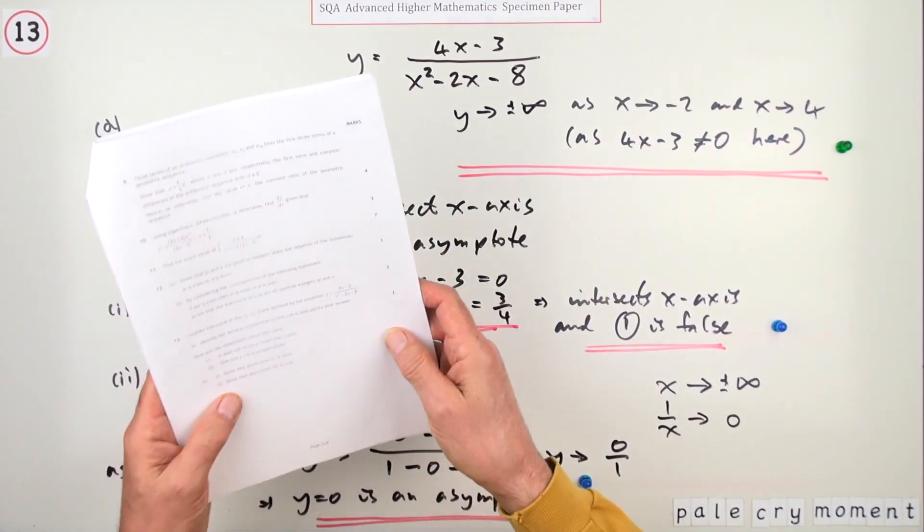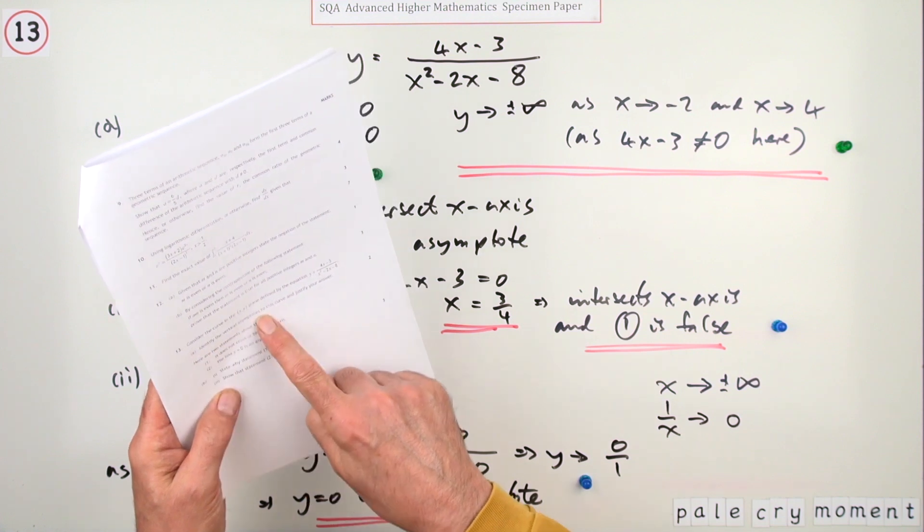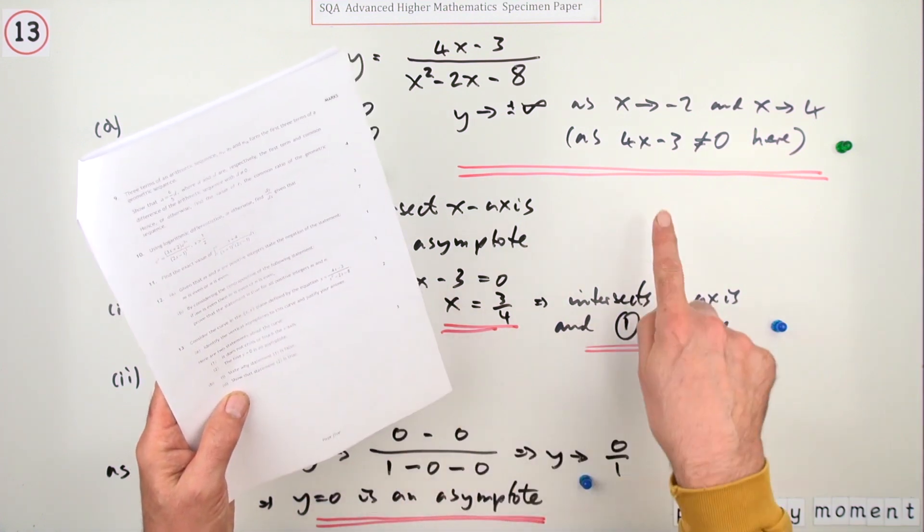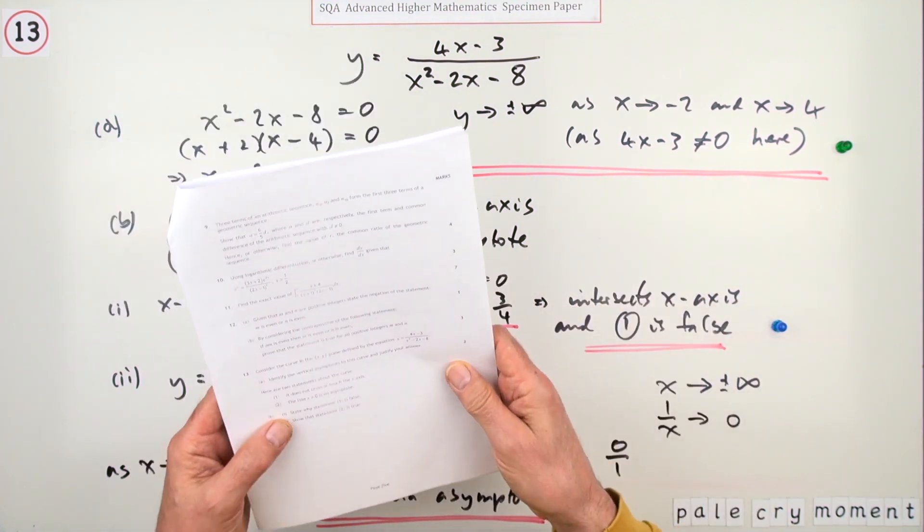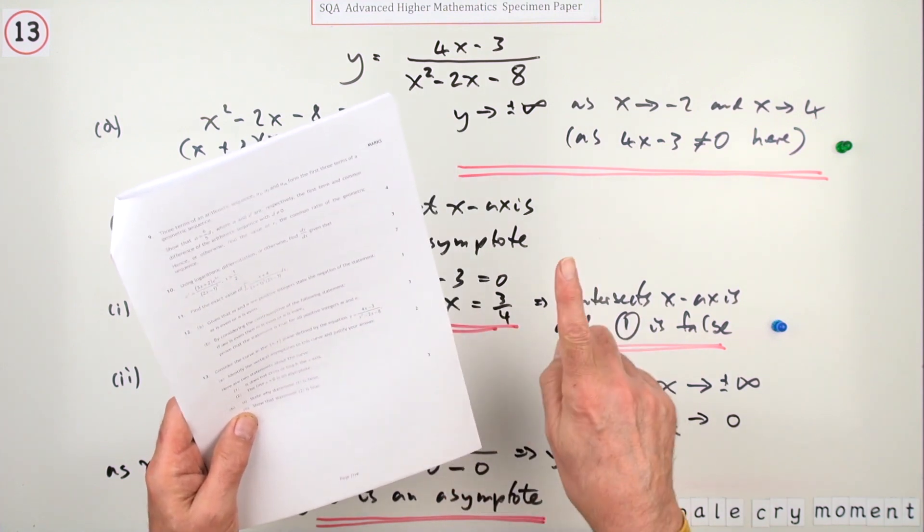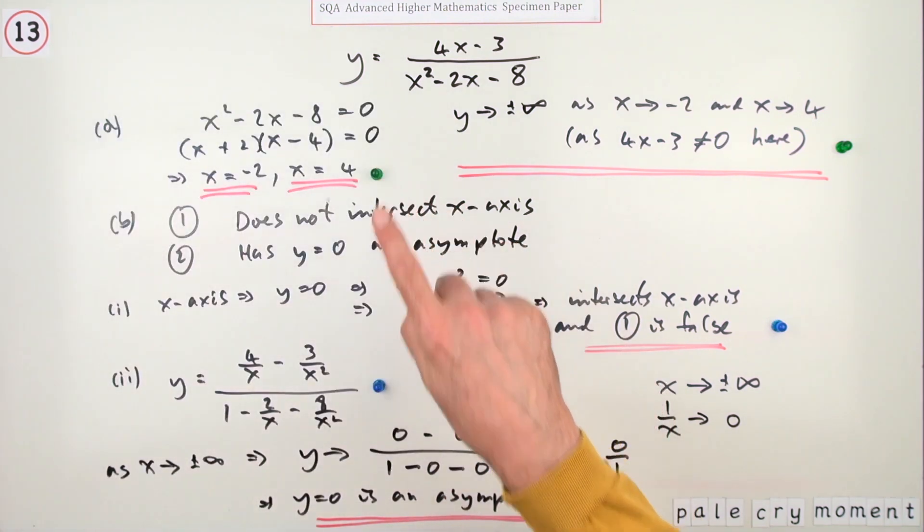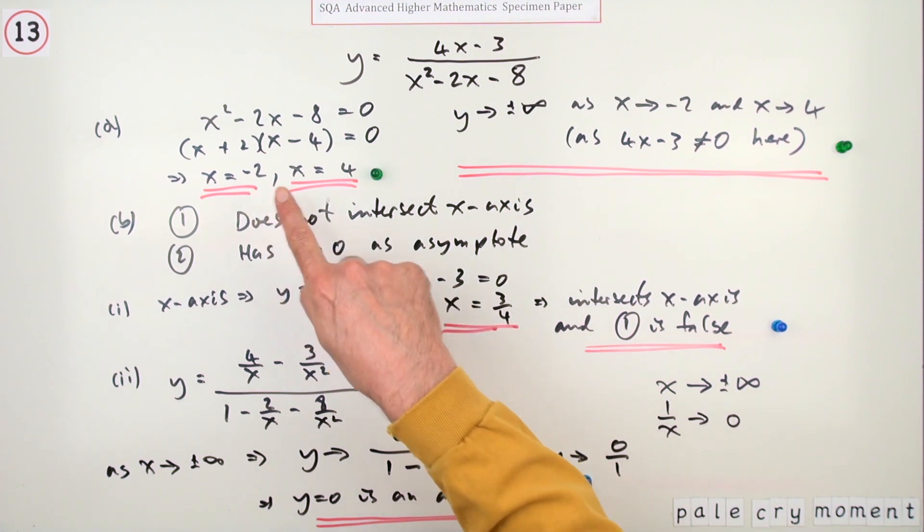Now going back to part A, part A did say identify the vertical asymptote but justify your answer, which isn't the sort of usual one. So that's different from justify the nature of them, as in how do they approach infinity around these two values.